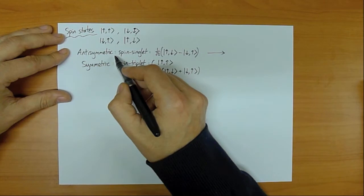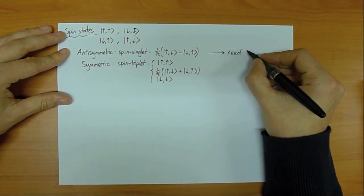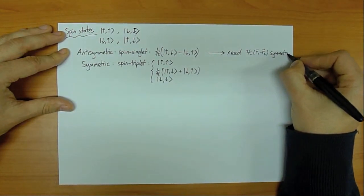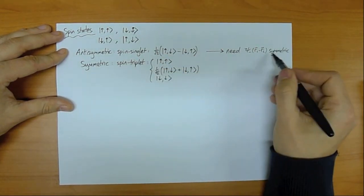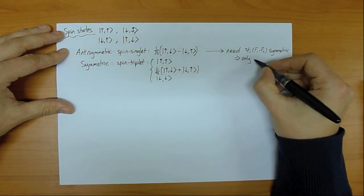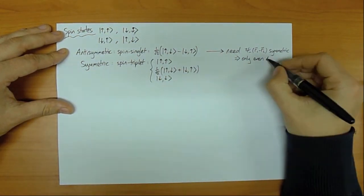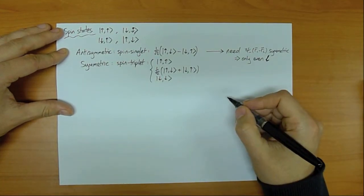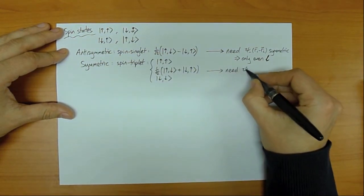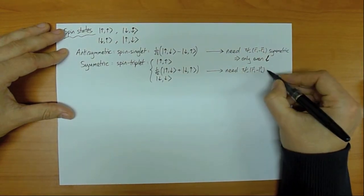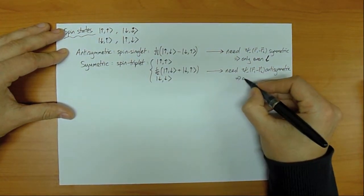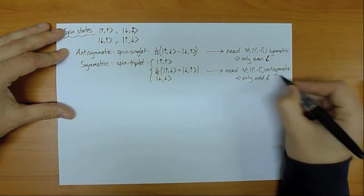If the spin part of the wave function is antisymmetric (spin singlet), then psi_minus(R1−R2) should be symmetric, because I need an overall minus sign — minus from spin means plus from spatial — which means only even values of L are allowed. Conversely, if the spin part is symmetric (spin triplet), the spatial part must be antisymmetric, and therefore only odd values of L are allowed.